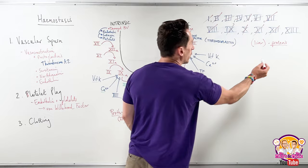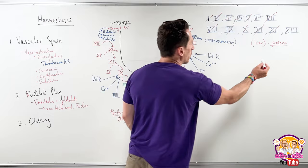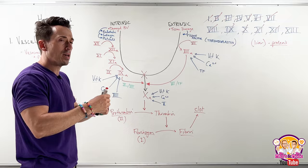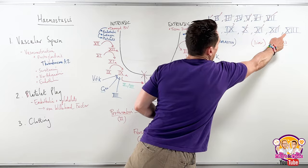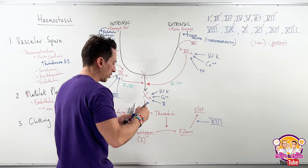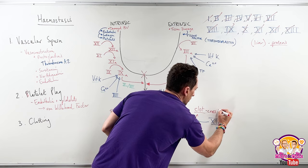We're missing one factor — factor 13. Fibrin forms the clot: these are strands that can be embedded between platelets and adhere to them, but they need to be cross-linked to hold everything strongly together. That's what factor 13 does — it allows the clot to cross-link.